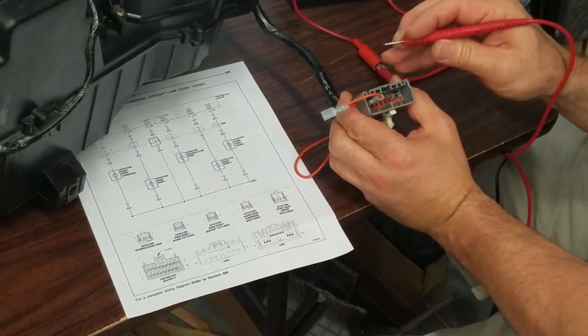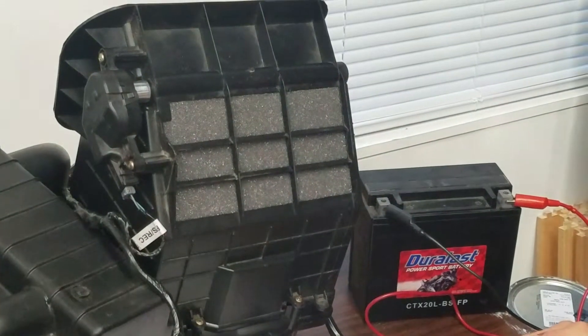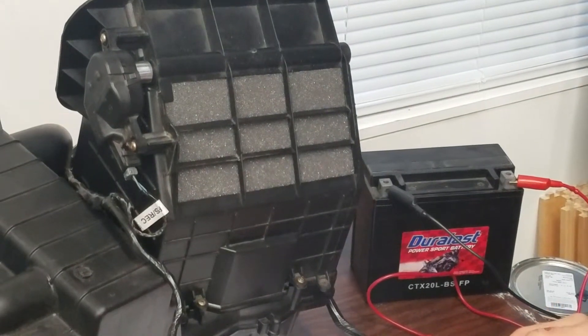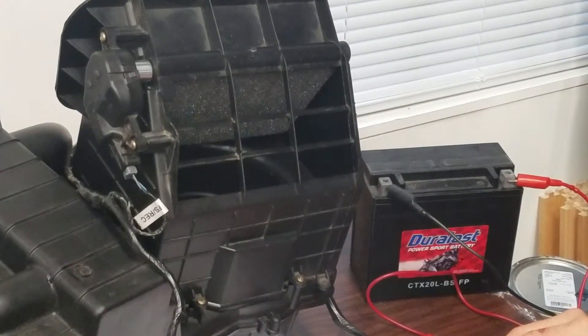Alright so the first one we're going to hit is the recirc door which is pin 4, so basically I'm putting voltage across 2 and 4. You can see it operate.